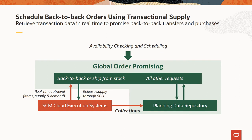You can now check availability and schedule orders for back-to-back items using real-time supply data from Oracle Cloud Supply Chain Execution. If the item is available on hand, it will be shipped from stock. Otherwise, Global Order Promising will trigger a new purchase order or transfer order to fulfill the demand. Any changes in supply, shipment, and delivery dates will be reflected in the sales order line throughout its lifecycle. With this change, you no longer need to collect supply data to update availability for back-to-back purchases or transfers. All other order promising requests continue to rely on collected data.